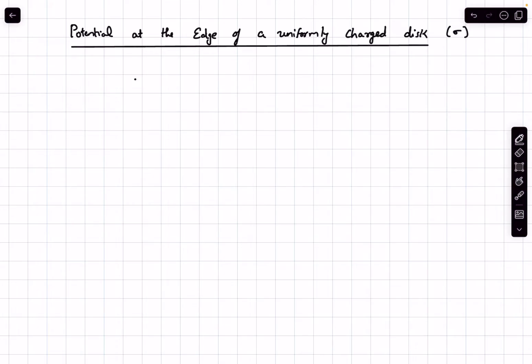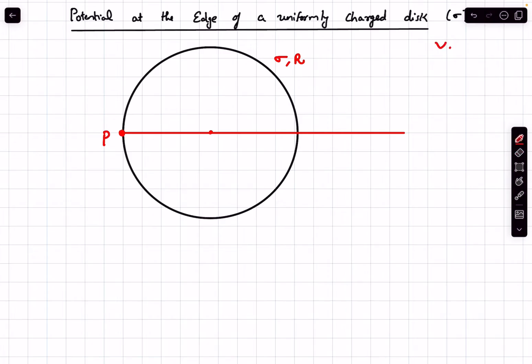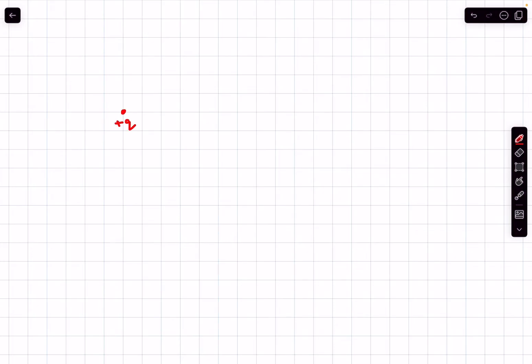First we'll determine the potential at the edge of a uniformly charged disk. So let's say this is our disk and its surface charge density is sigma and the radius of the disk is capital R. Let's call the edge point as P, so we are trying to determine the potential at this point P due to the disk. We are taking the reference potential at infinity to be zero.